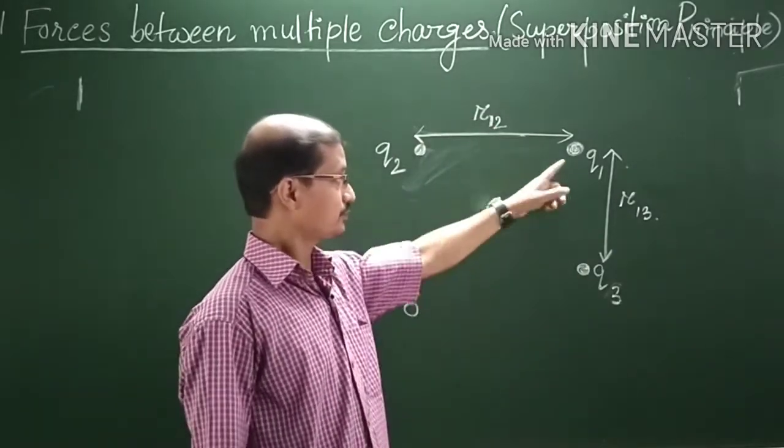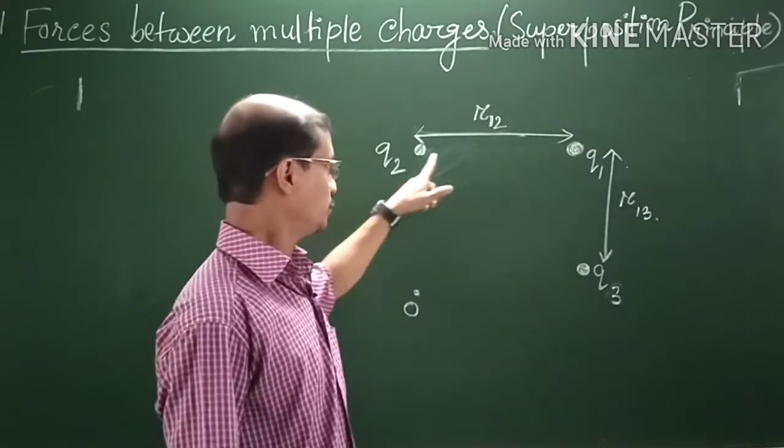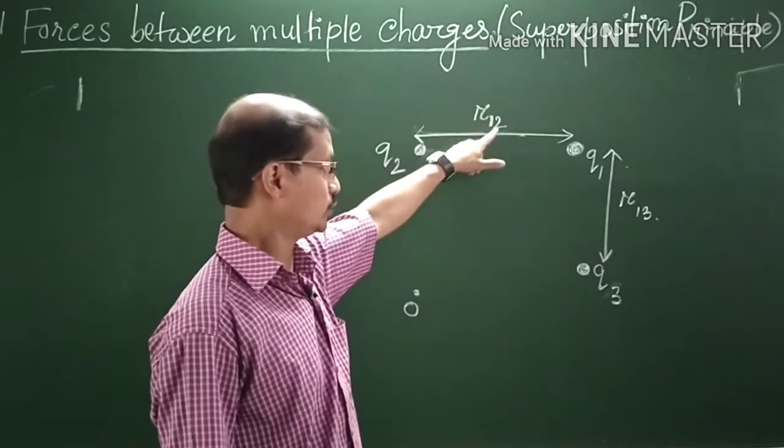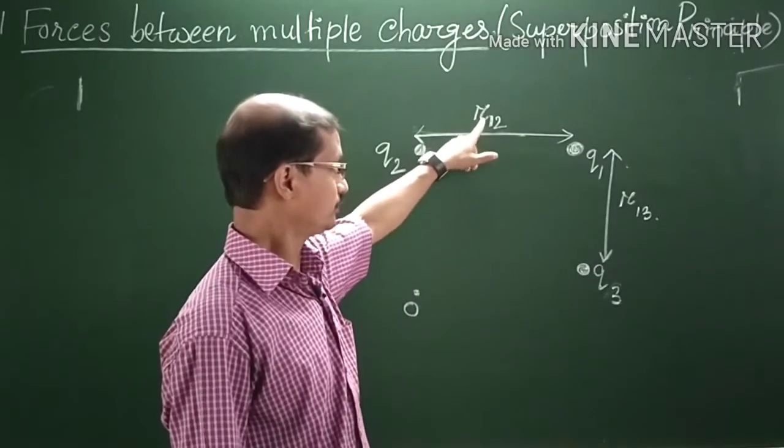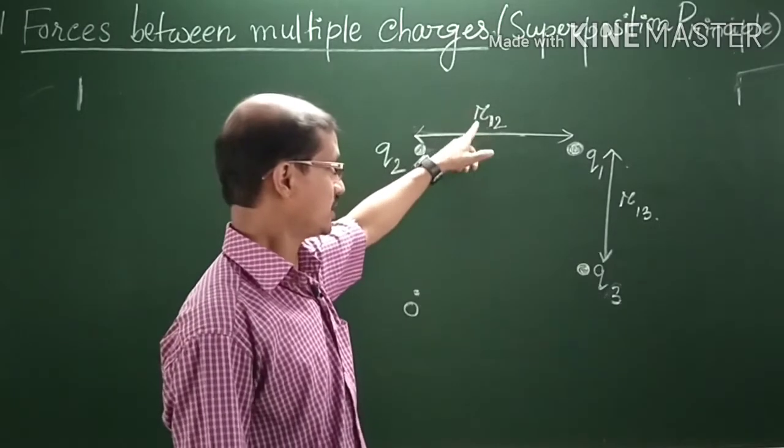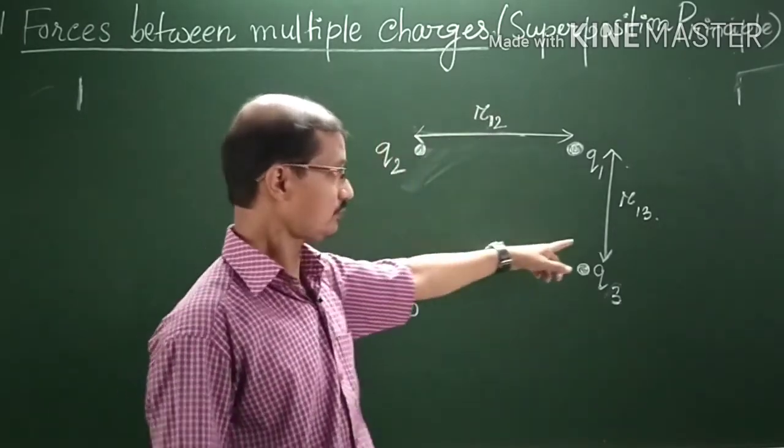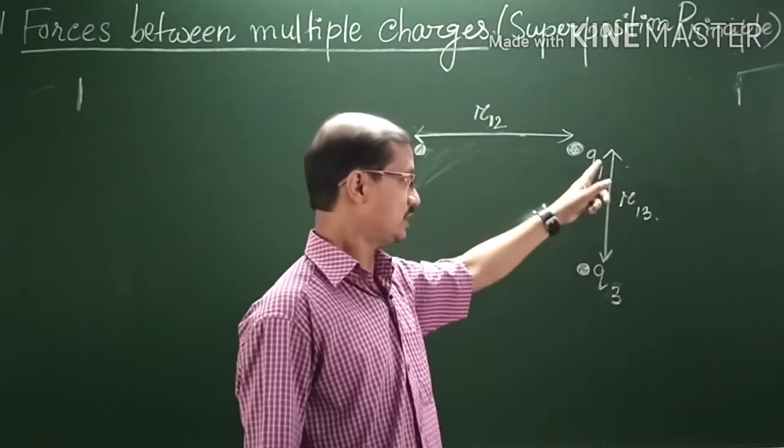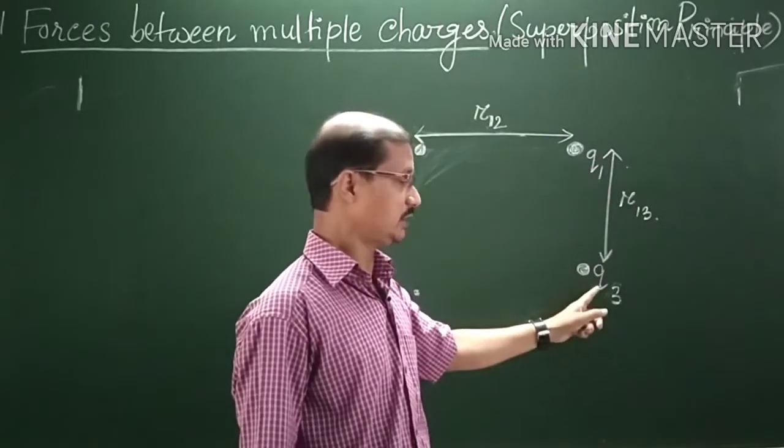The separation between Q1 and Q2 is R12. R suffix 12 is the separation between Q1 and Q2. R13 is the separation between Q1 and Q3.